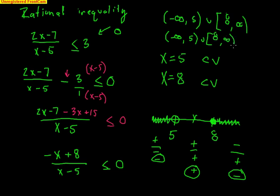Be very careful with parentheses versus brackets. You've got to understand that critical values come from factors, and also from top and bottom when dealing with rational inequalities. Once you have the critical values, make your number line, then find out where the solutions lie.